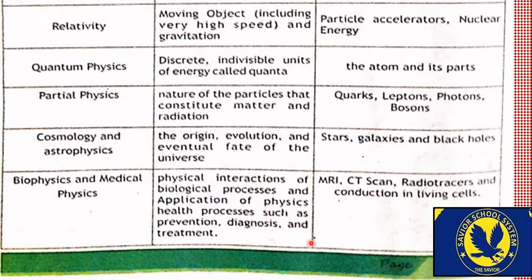Cosmology and astrophysics — the origin، evolution and eventual fate of the universe۔ Cosmos یعنی پوری universe کو cosmos کہتے ہیں۔ یہ field اس بات پر focus کرتی ہے کہ اس کائنات کی origin کیا تھی، یہ شروع کیسے ہوئی، evolution کیسے ہوئی، اور eventual fate — آخر کار اس کا end کیا ہوگا۔ Stars، galaxies اور black holes کے بارے میں جاننا astrophysics اور cosmology کہلاتا ہے۔